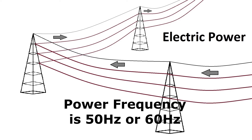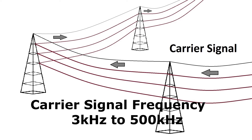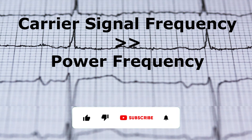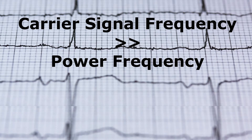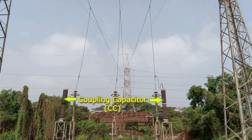The power frequency is 50 hertz or 60 hertz, and the carrier signal frequency is in kilohertz, ranging from 3 kilohertz to 500 kilohertz depending upon the location. The carrier frequency range is different for different countries. In short, carrier signal frequency is significantly high compared to the power frequency, and this difference in frequency is used to distinguish and separate the power signals and carrier signals.